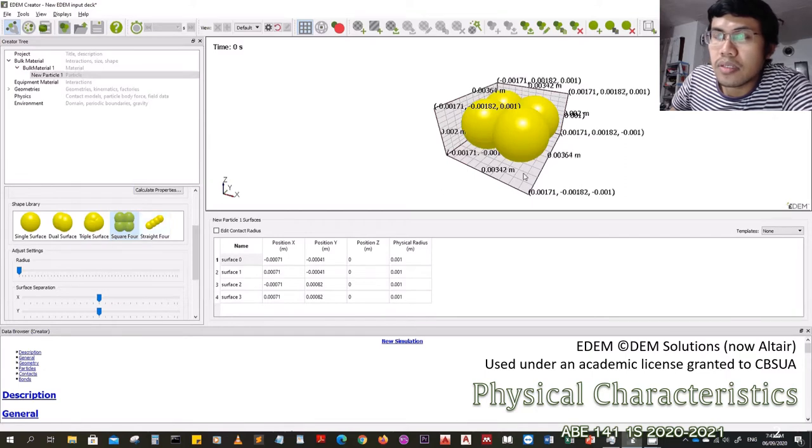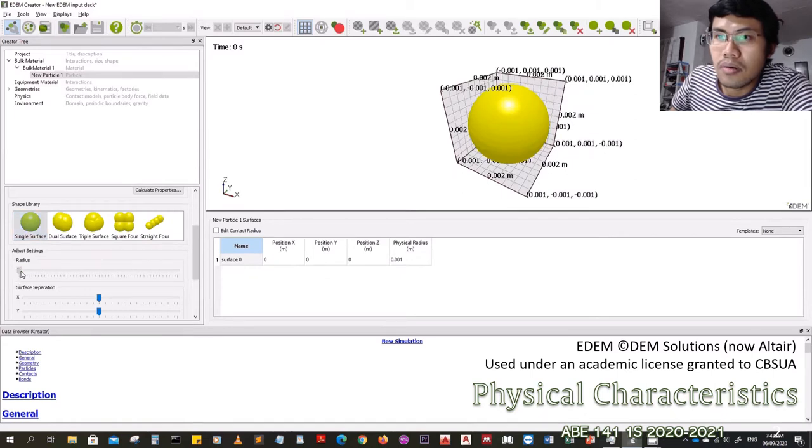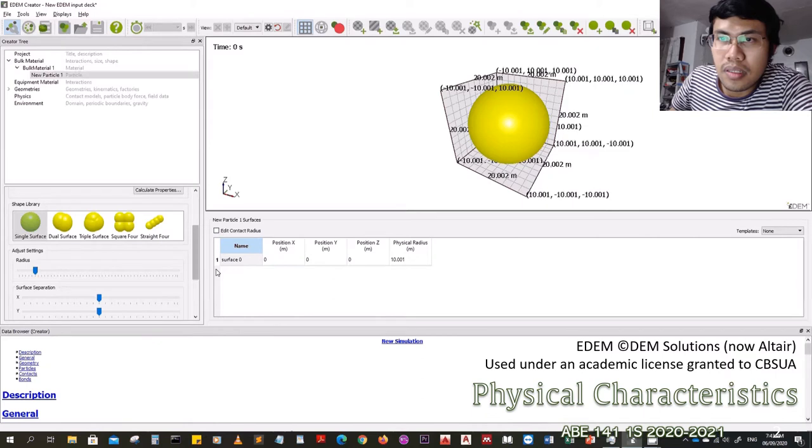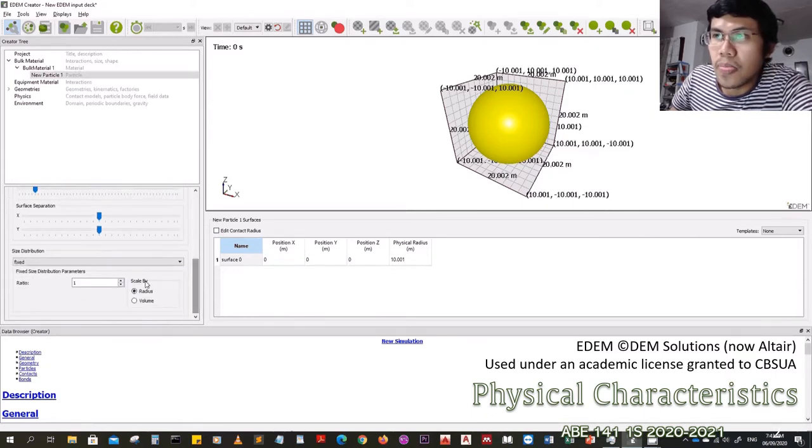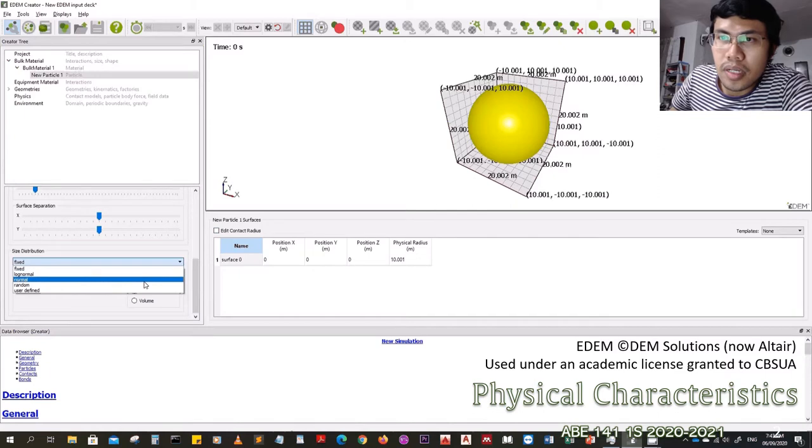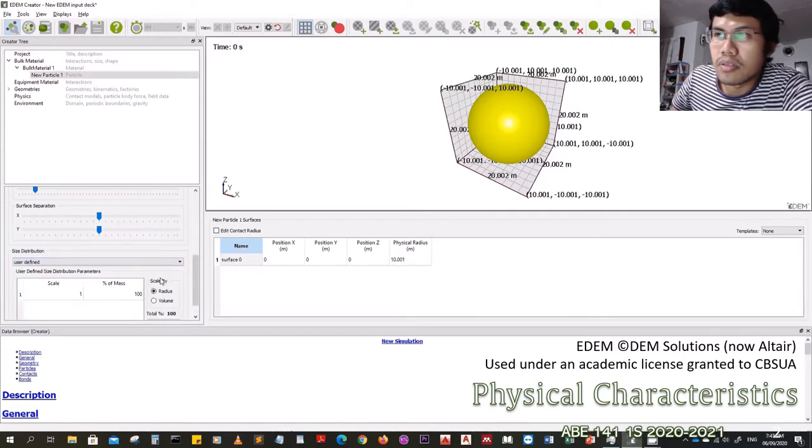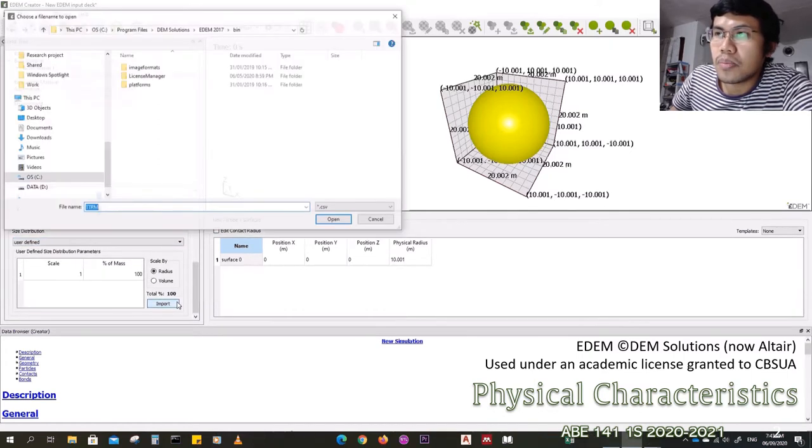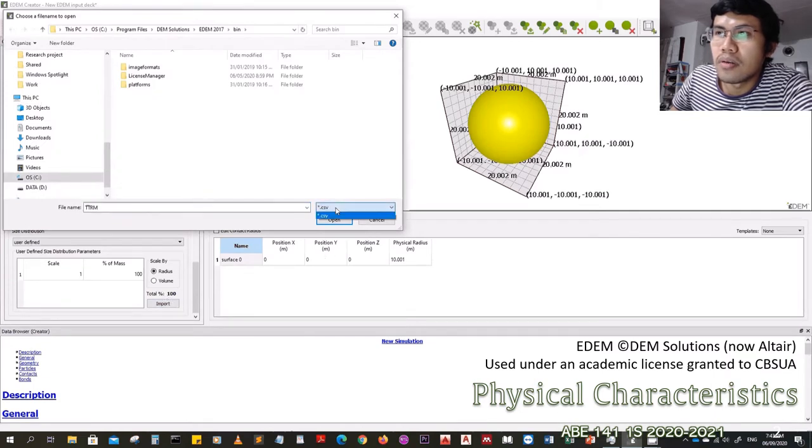Since the simulation will require thousands of this bulk material that is being defined, the variability can be also provided after setting the radius. So we have already discussed the size distribution, the variability, the Gaussian, the log normal, or it can be just fixed. But there's also another option here of random, which is based on the random number generator.